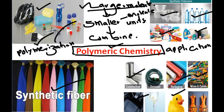So polymer chemistry is the branch in which we study the process of polymerization — the process in which smaller molecules combine to form one large molecule. This is all about the branches of chemistry. If you have any questions, let me know in the comment box. Kindly like and subscribe to my channel. Thank you so much for watching.